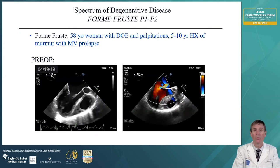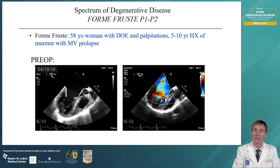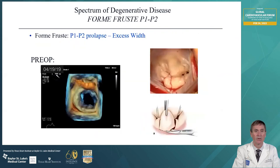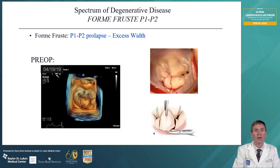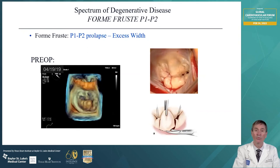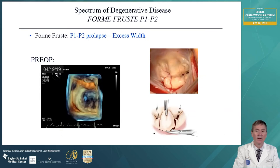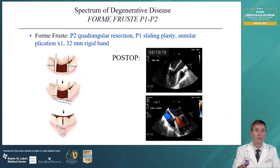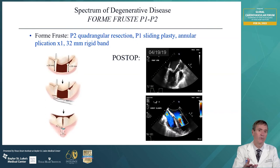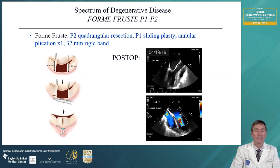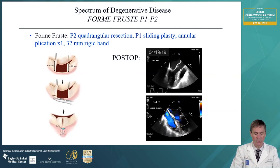Here's a form thrust patient — a 58-year-old woman with dyspnea on exertion and palpitations, a five-year history of a murmur and mitral valve prolapse now with significant regurgitation and symptoms. The three-dimensional image showed P1 and P2 prolapse with excess width and height, as confirmed in the intraoperative image. We not only resected P2, but because P1 was still too big, we did a sliding plasty — cut underneath and unroofed the P1 segment, moved it over towards P3 to decrease the height of P1, then reconstructed the leaflet in normal fashion with a rigid band. No regurgitation after the procedure.